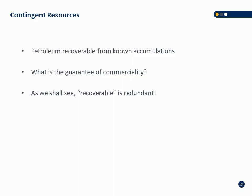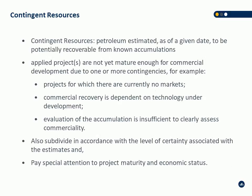The definitions of contingent, prospective, and reserves are essentially identical in PRMS and COGI. Contingent resources are petroleum estimated as of a given date to be potentially recoverable from known accumulations, but the caveat is that applied projects are not yet mature enough for commercial development due to one or more contingencies. Examples include projects for which there are currently no markets, commercial recovery dependent on technology under development, or insufficient evaluation to clearly assess commerciality. Maturity subclasses include development pending, development on hold, and development unclarified.